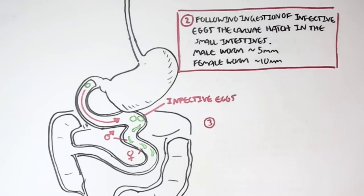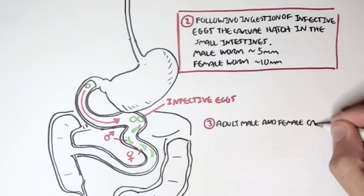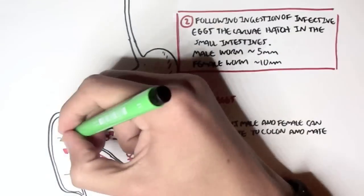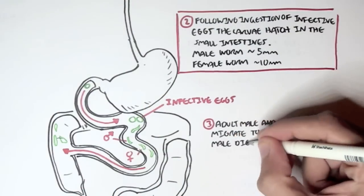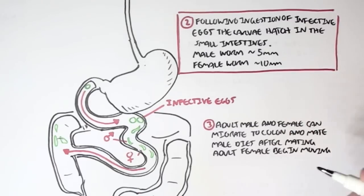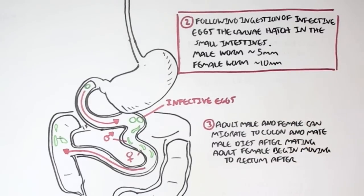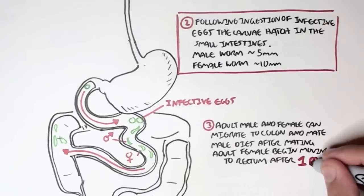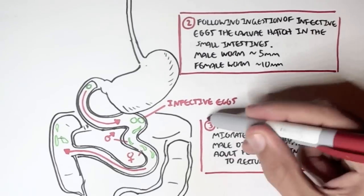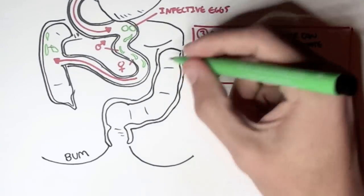Now the adult male and adult female can migrate to the colon, the large intestines, and then mate. The male dies after mating, and the adult female begins moving to the rectum area about one month later. So here the worms migrate to the colon, they can mate, the female survives.